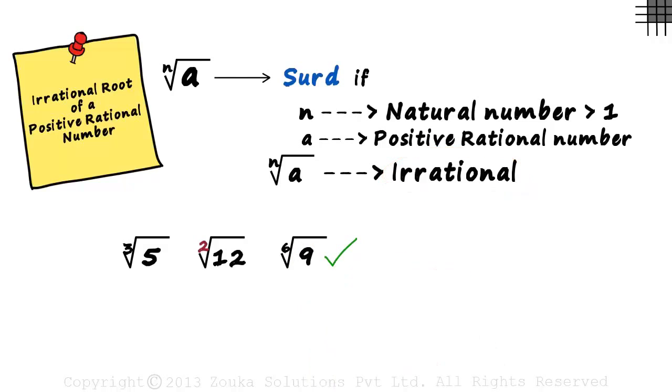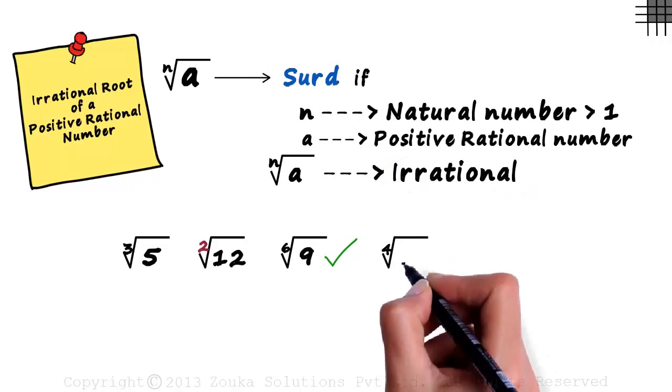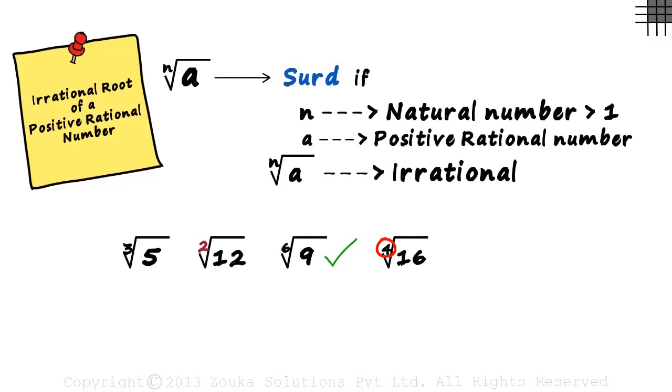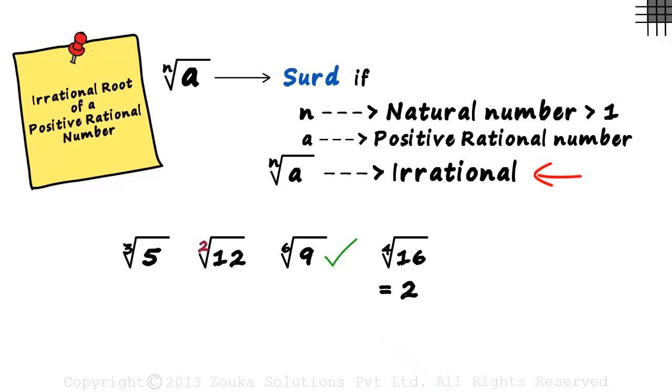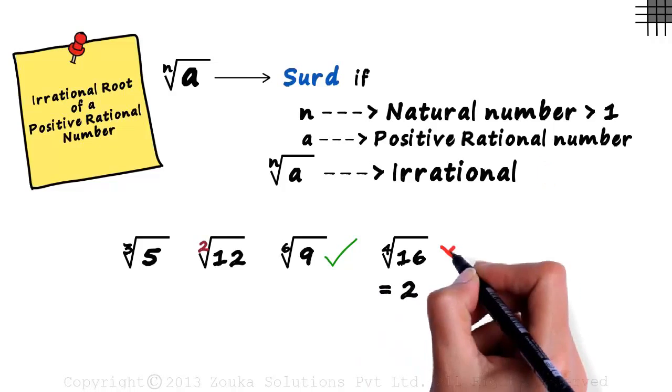What about the fourth root of 16? The order is a natural number greater than 1. The base is a positive rational number. But wait! Is the result irrational? No, it equals 2. Since the third condition is not satisfied, this is not a SIRD.